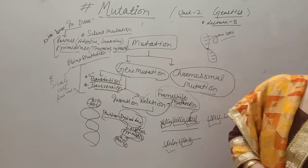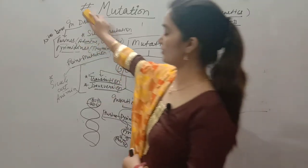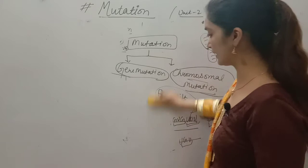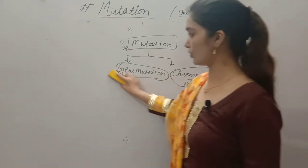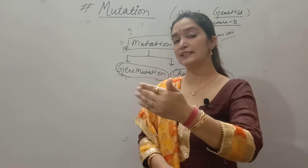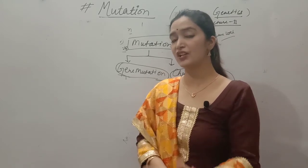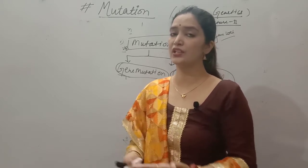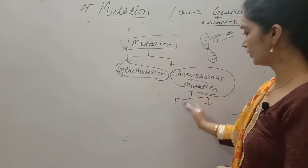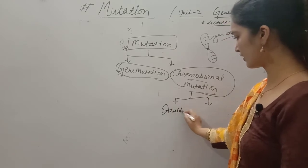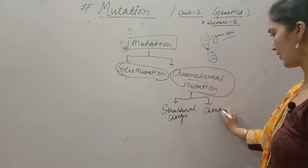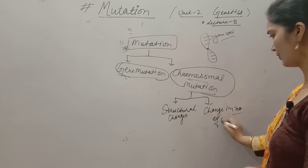Now coming to chromosomal mutation — chromosomal mutation is also called chromosomal aberration. In this, there may be a change in the structure of chromosomes or a change in the number of chromosomes. In humans, each cell normally has 46 chromosomes (23 pairs). If there are fewer chromosomes, like 45, or extra chromosomes, like 47 or 48, it leads to a disease condition. Chromosomal mutation may be due to structural changes or a change in chromosome number.